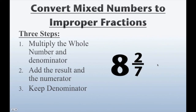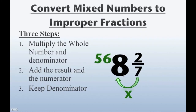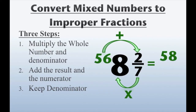How about 8 and 2 sevenths? Same procedure. We're going to multiply the whole number and the denominator — 7 is our denominator, 8 is our whole number, 7 times 8 is 56. Step 2: we add the result and the numerator — that's 56 plus 2 and that gives us 58. And step 3 is to keep our denominator, which is going to be 7. Therefore, 8 and 2 sevenths equals 58 sevenths as an improper fraction.